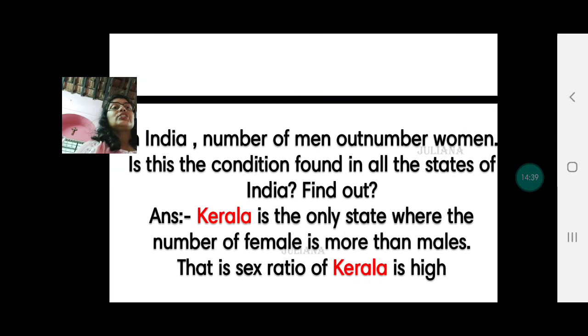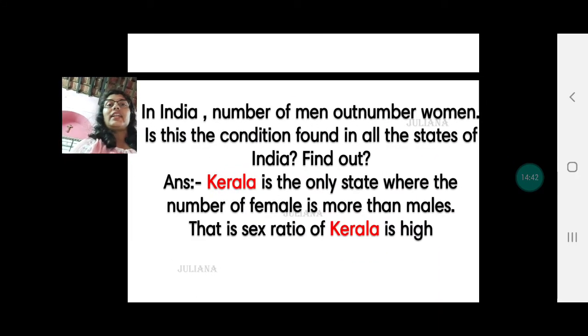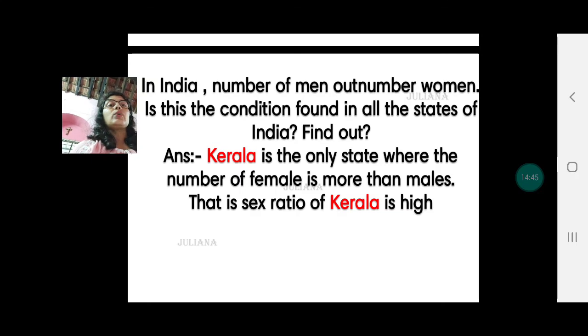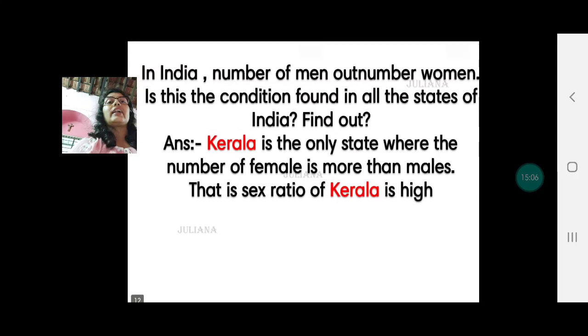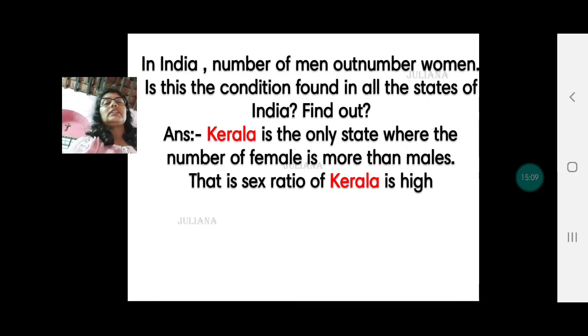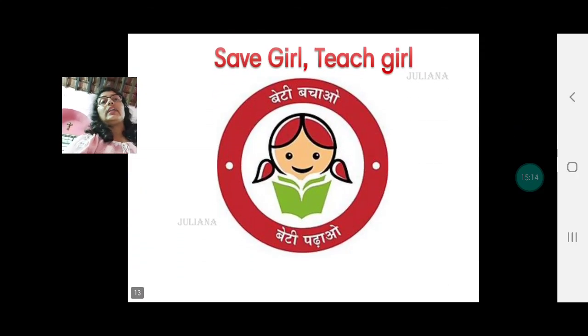In India, the number of men outnumber the number of women. Is this condition found in all the states of India? Find out. No. Kerala is the only state where the number of females is more than males. That is, the sex ratio of Kerala is the highest. What could be the reason? Literacy. Because Kerala is also the most literate state. Almost 99.9 percent of population in Kerala is literate. In fact, they had 100 percent literacy. At present it's around 99 point something.